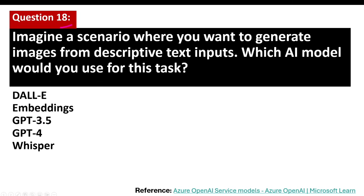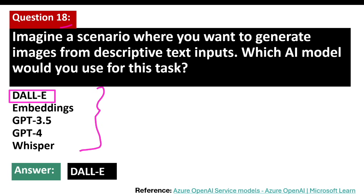Question number 18. Imagine a scenario where you want to generate an image from descriptive text inputs. Which AI model would you use for this task? The correct answer is DALL-E. DALL-E is a type of generative AI model designed specifically to create images from natural language descriptions. You describe a scene or an object in words, and DALL-E can take those words and generate a picture that matches your description.